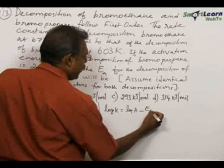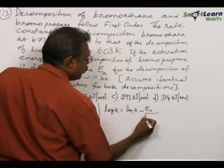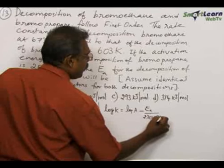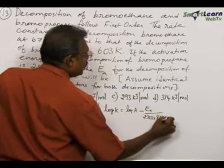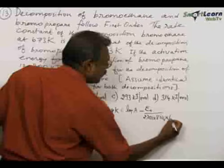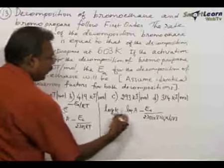That is not known Ea by 2.303 times 8.314 into temperature. Here decomposition of bromoethane at 673 Kelvin, so 673 Kelvin.